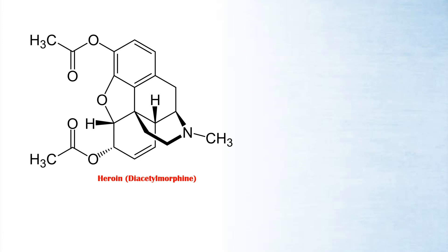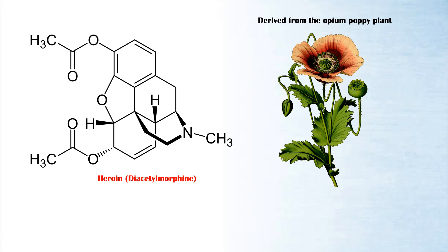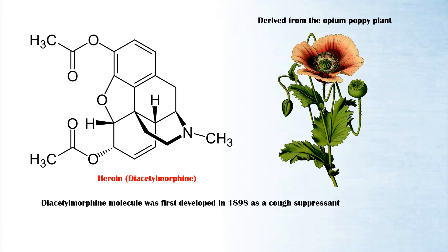Heroin, also known as diacetylmorphine, is derived from the opium poppy plant. The diacetylmorphine molecule was developed in 1898 as a cough suppressant. However, today, heroin has no clinical indication in most countries.